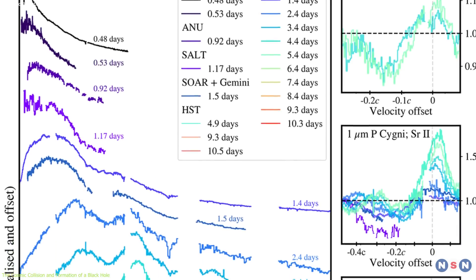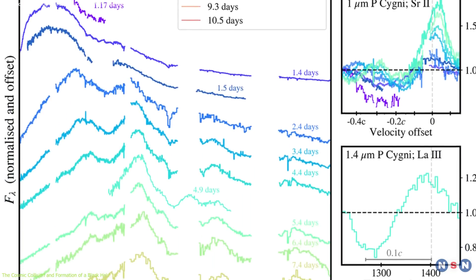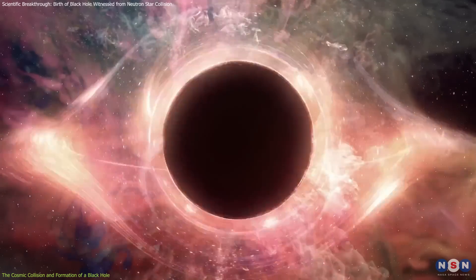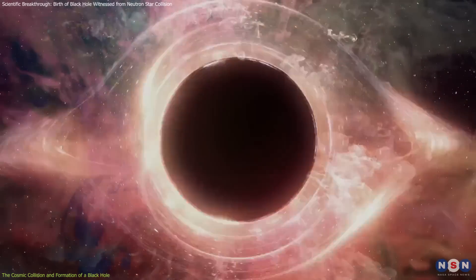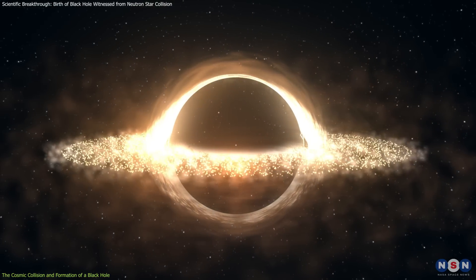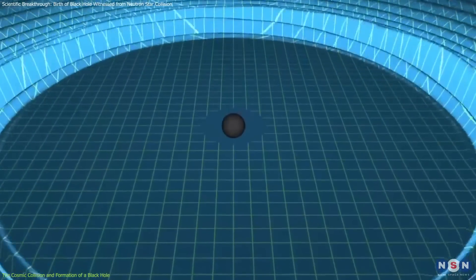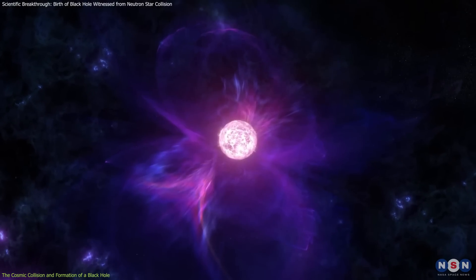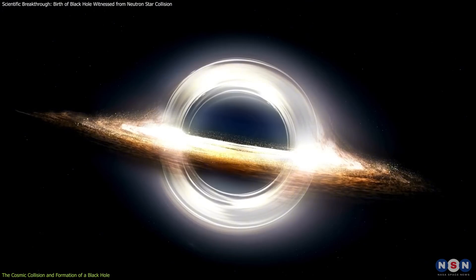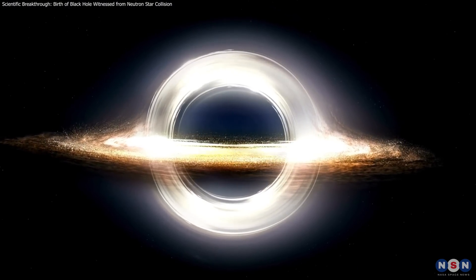This observation has been possible due to the combined power of telescopes from across the world, with the Hubble Space Telescope capturing key details of the event. This lets us witness the birth of a black hole, one of the universe's most mysterious and extreme objects. It also provides astronomers a detailed look at the final moments of neutron stars, which hold clues about the forces that govern our universe. This is special, because until now, black holes have been challenging to study directly. They're invisible to our telescopes.